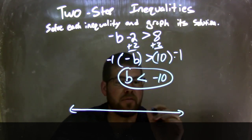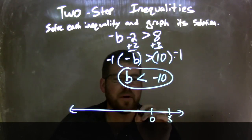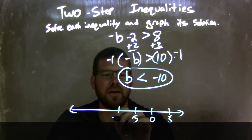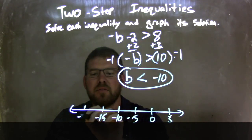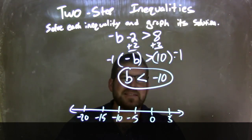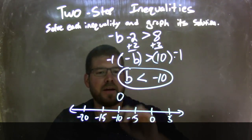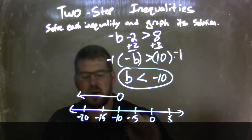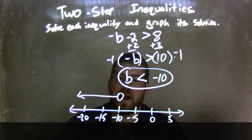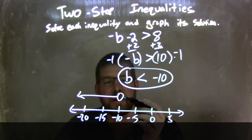Let's go by 5s: 0, 5, negative 5, negative 10, negative 15, negative 20. If B is less than negative 10, we have an open circle at negative 10 because it's not equal to. Since B is less than, we put our arrow to the left. We have a graph that matches our inequality, where B is less than negative 10.